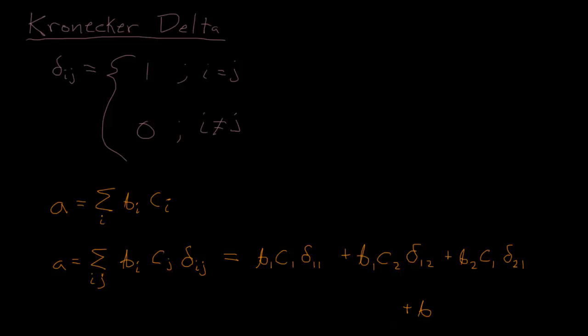And one more term, we'll get b, so i and j both equal two, b2, c2, times Kronecker delta δ22. And so this was just dotting two two-dimensional vectors.